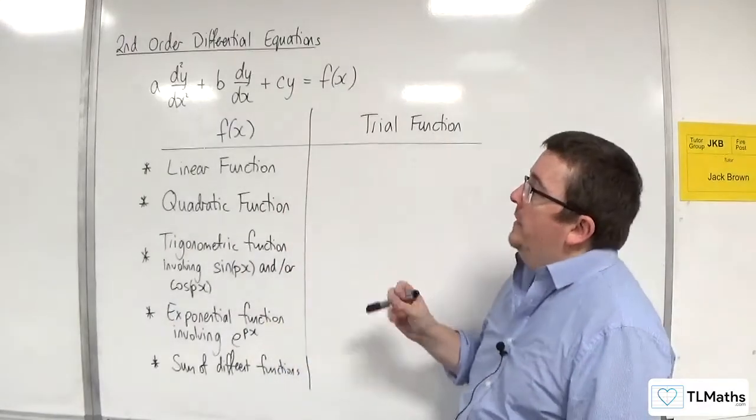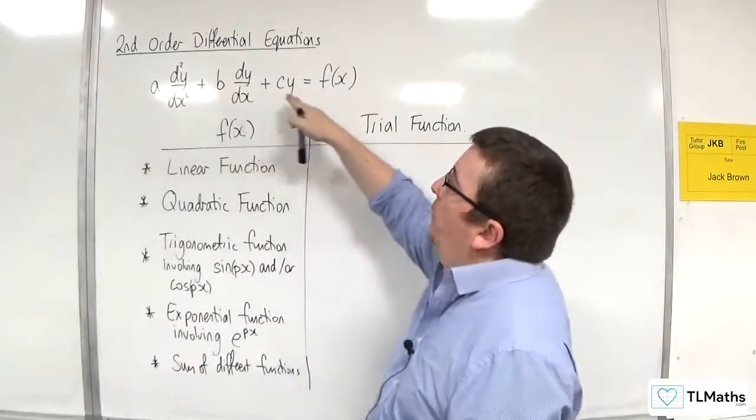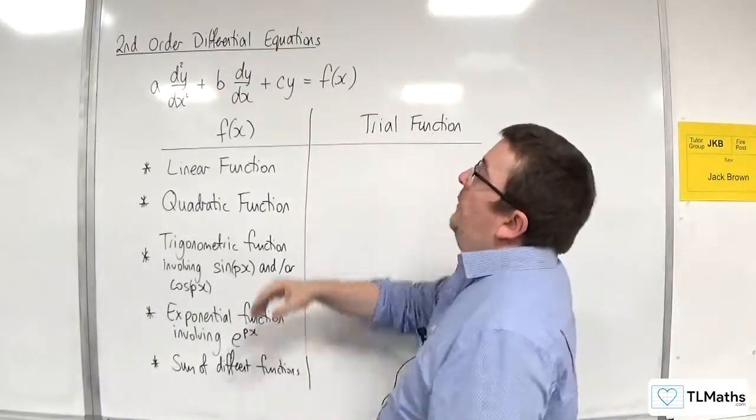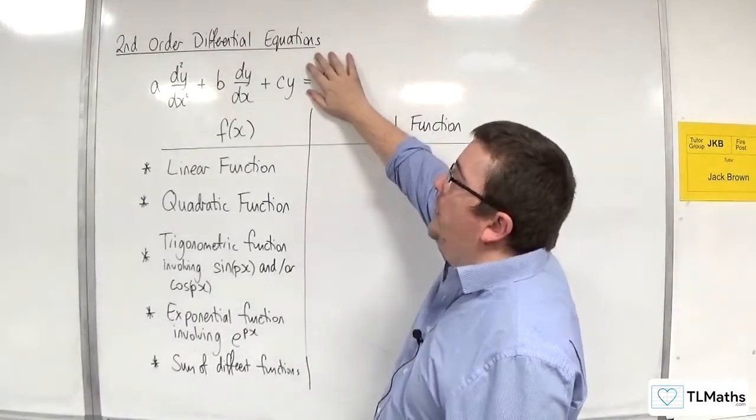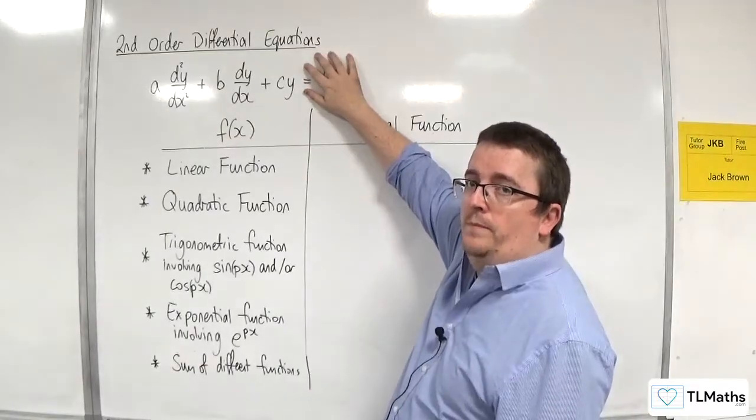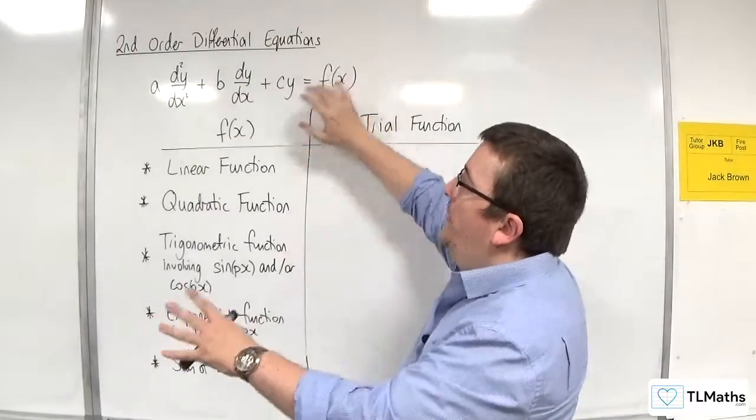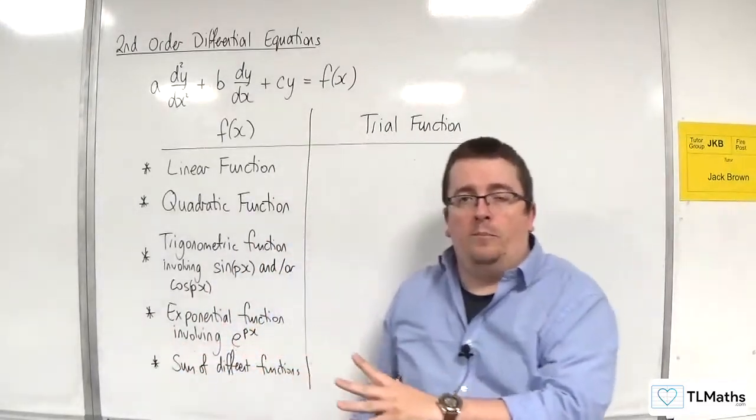Now, what we've seen is that if we need to solve this second order differential equation, step one is you solve the homogeneous case. You put the right-hand side equal to zero, you get through to the auxiliary equation, you solve that, and then you can get your complementary function.